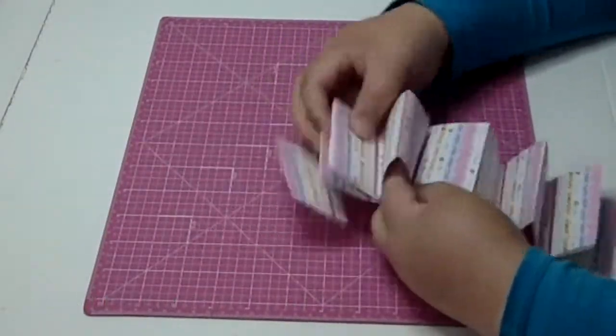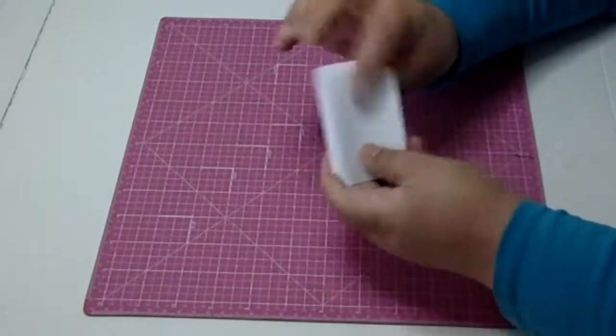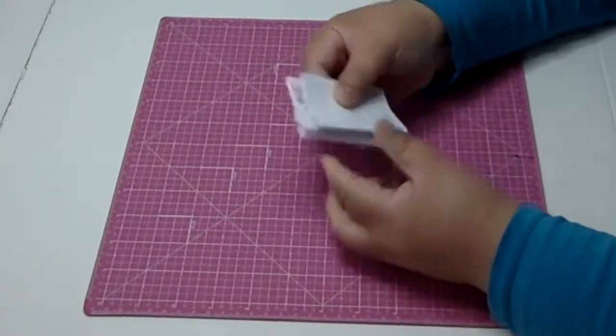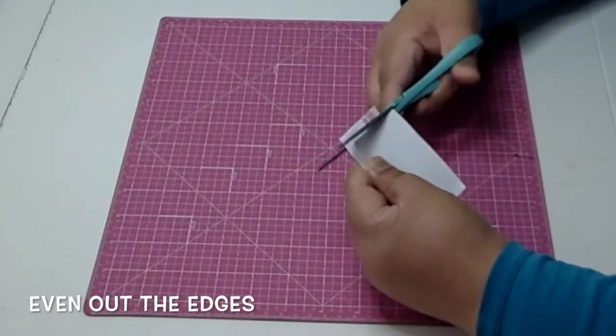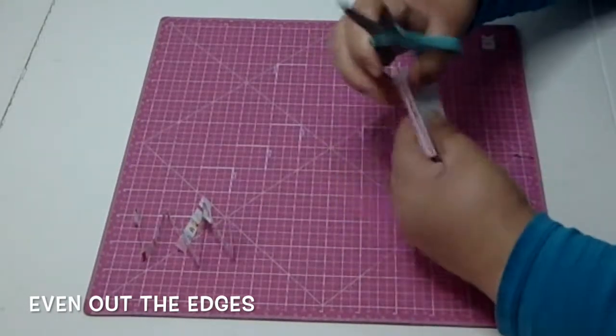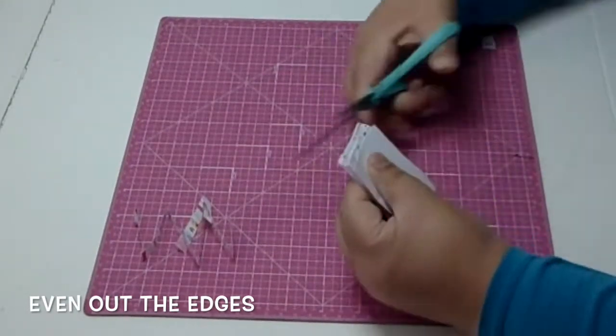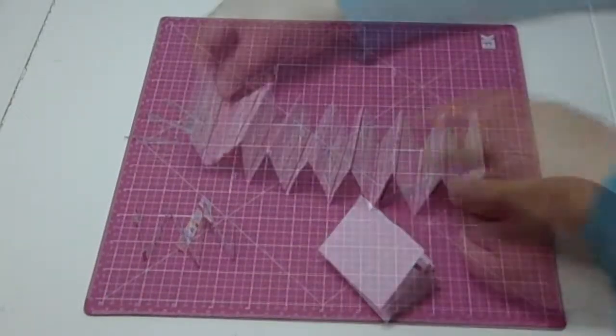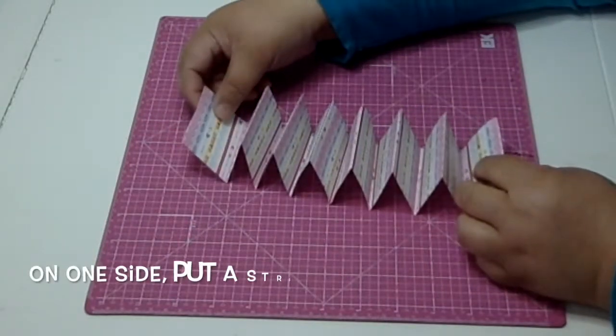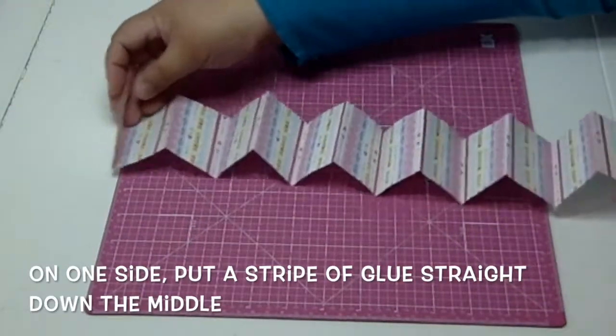So now I'm actually coming out with seven V folds which is good - it's more than six, it's less than eight. So it's not perfect, nothing ever is. I'm just gonna even out the edges by just cutting off whatever's sticking out the edges like this.